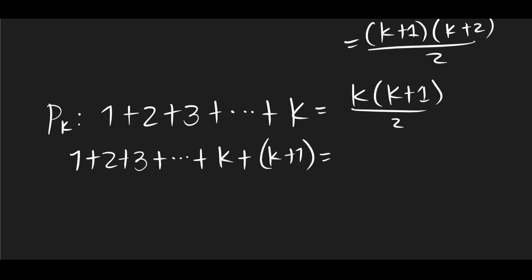Now that we've added k plus 1 on the left-hand side, we must also add it on the right-hand side for the statement to be true. So k times k plus 1 all over 2 plus k plus 1. Now, if we simplify this right-hand side, with a common denominator of 2, we get k times k plus 1 plus 2 times k plus 1.